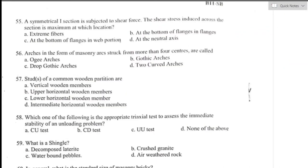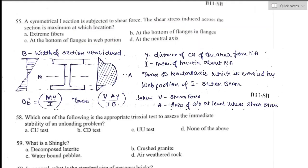Question number fifty-five: a symmetrical I-section beam is subjected to shear force. The maximum shear stress induced across the section occurs at the neutral axis, where the major portion of the shear is carried by the web of the I-section.